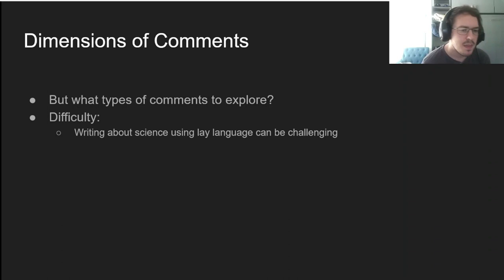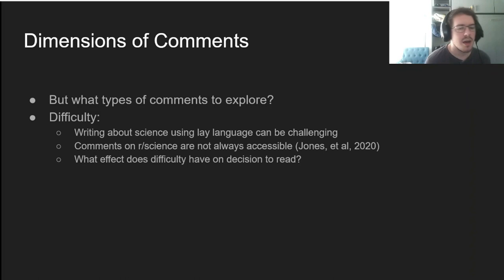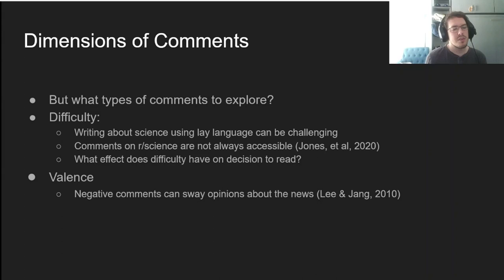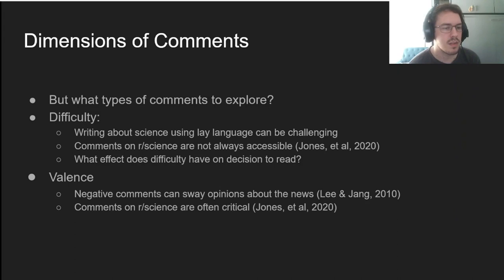We know that writing about science using lay language can be really challenging, and as a result, comments on r/science aren't always accessible to most people. So we're curious, what effect do these difficult comments have on people's interest in reading the articles they're associated with? Our second dimension was valence. Past research shows that negative comments can sway people's opinions about the news, and comments on r/science are often really critical of the studies we're talking about. So what effect might this have?